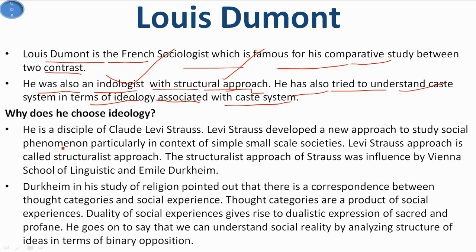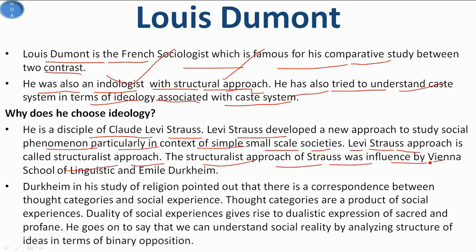Dumont is a disciple of Claude Lévi-Strauss. Strauss studied social phenomena particularly in the context of simple, small-scale societies — understanding the whole society by considering a small-scale society, living within it and experiencing its conditions. That is why Lévi-Strauss's approach is also called the structuralist approach. This structural approach was influenced by the Vienna School of Linguistics and Émile Durkheim. Durkheim, in his study of religion, pointed out that there is a correspondence between thought categories and social experience.